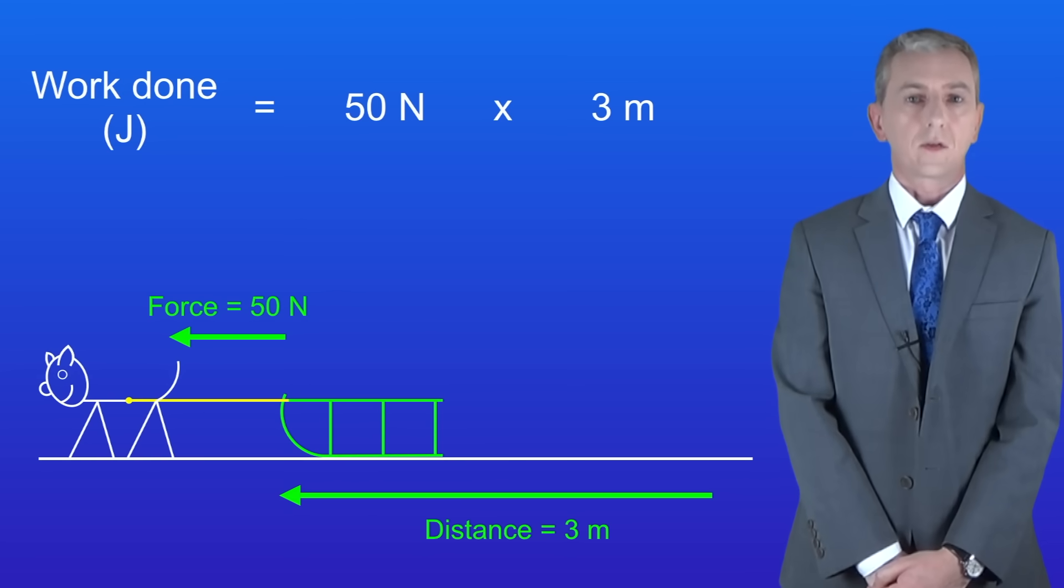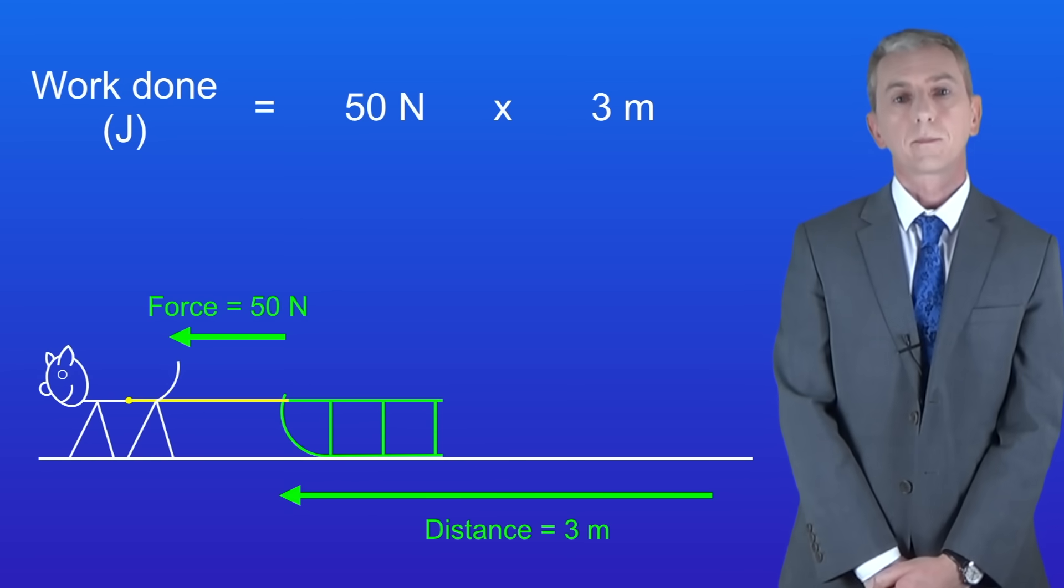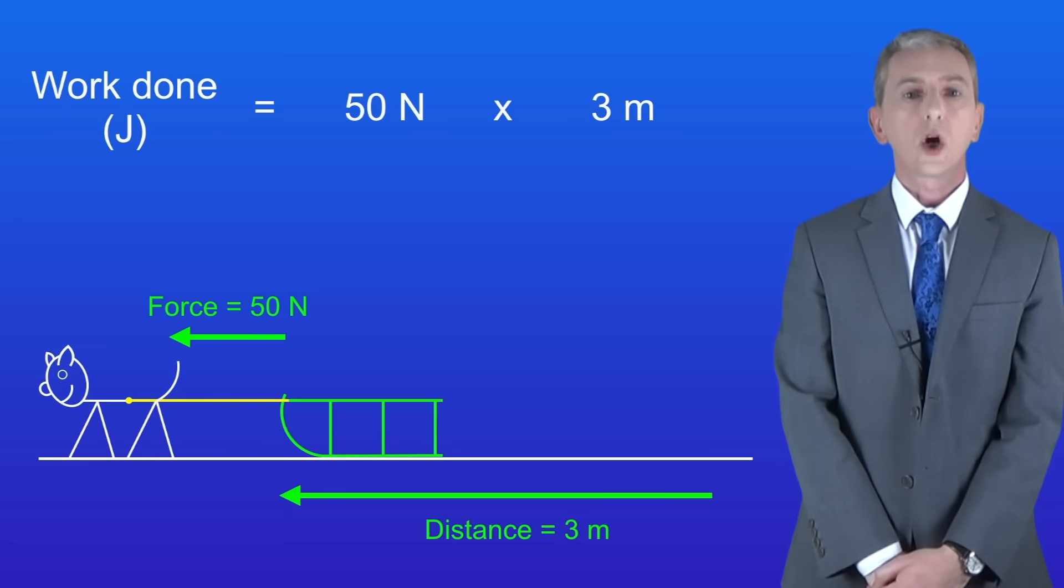So the force is 50 newtons and the distance is 3 meters. Multiplying these numbers gives us a total work done of 150 joules.